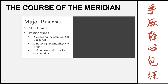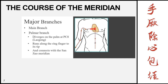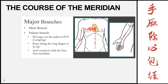The major branches of this meridian: the first branch is the main branch, which is the branch already discussed — originating in the chest, going laterally and continuing along the arm. The second branch is known as the palmar branch, and this branch diverges at pericardium 8, then runs along the ring finger to its tip and connects with the San Jiao meridian.